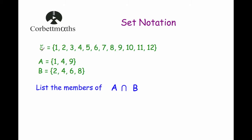Let's have a look at some questions. We've got a universal set which is the numbers 1 to 12. We've got set A which is {1, 4, 9} and set B which is {2, 4, 6, 8}. The question says list the members of A intersect B — so that means A and B, looking for numbers in both. We can see the number 4 is in both of them and there are no others, so A intersect B equals {4}. You could write it using set notation or just write down the number 4.